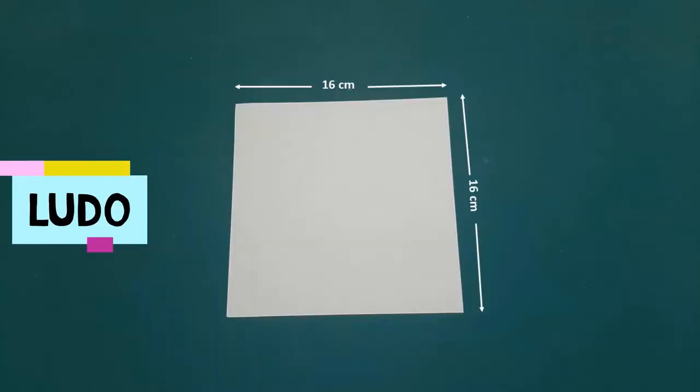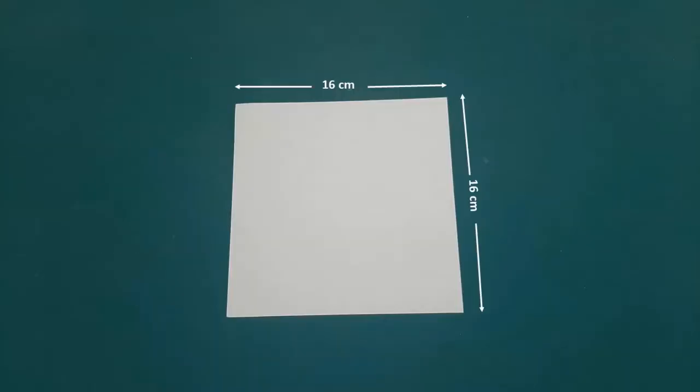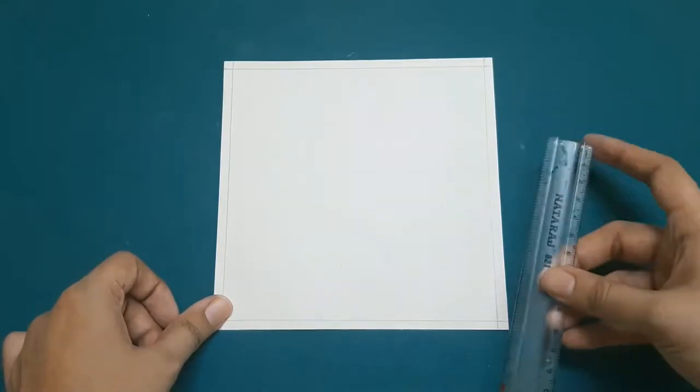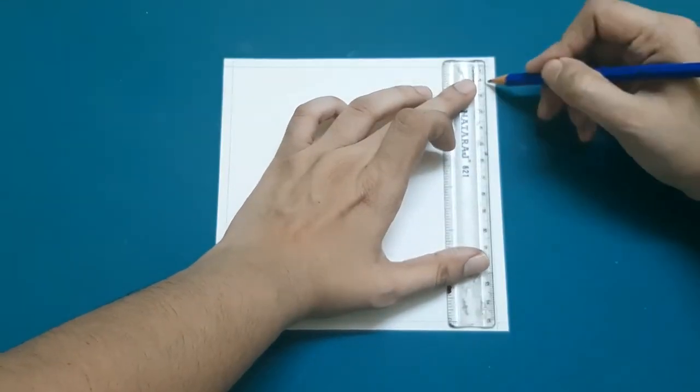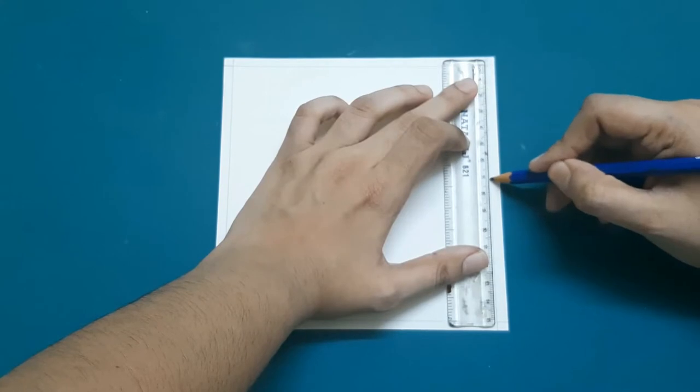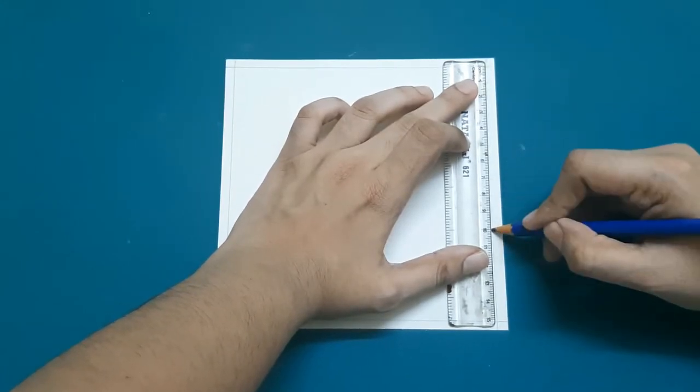To begin with, create a 16 by 16 cm square and inside that create a 15 cm square. Now, with the help of a ruler, create 1 cm markings on the 15 cm square and do this on all 4 sides.